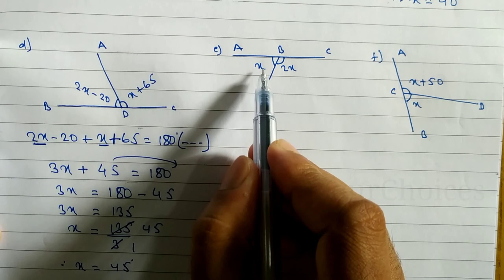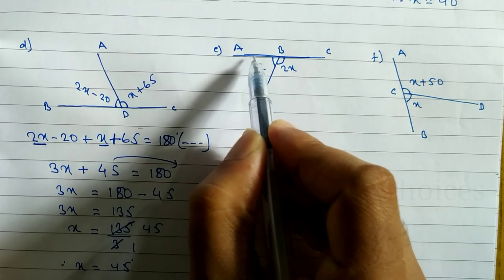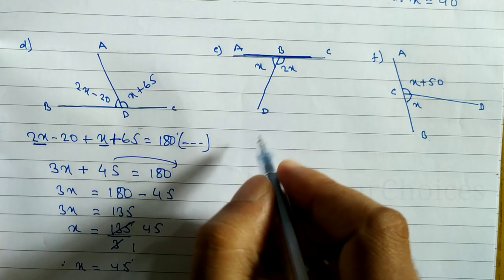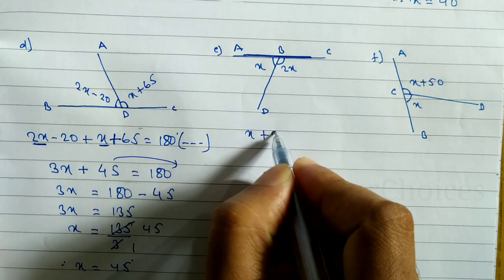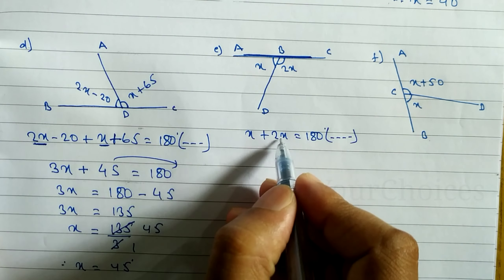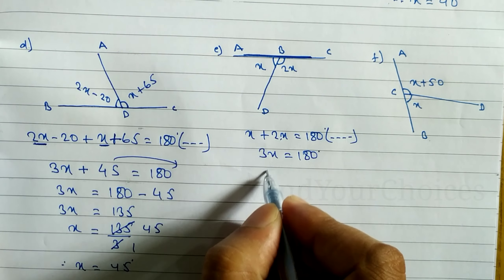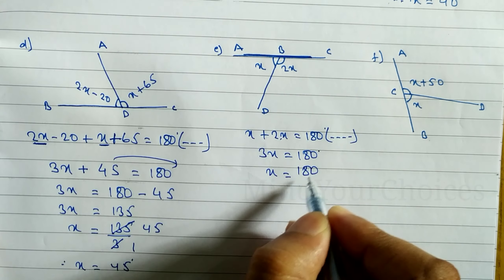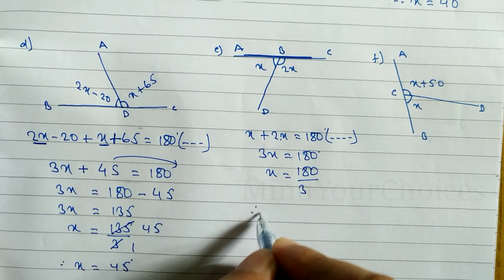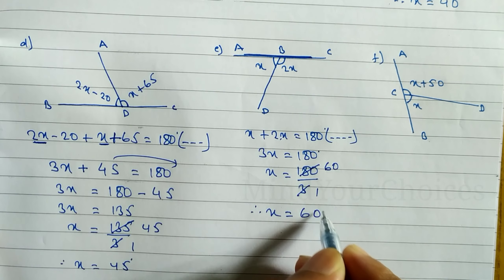In question number e, when you add the two angles we get 180 degrees because it is a straight line — supplementary or linear pair. So x plus 2x equals 180 degrees. Adding gives 3x equals 180, so x equals 180 divided by 3, and the value of x equals 60 degrees.